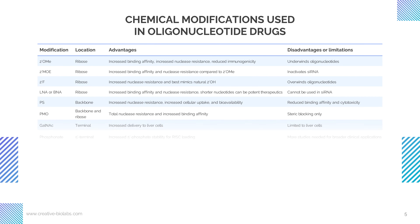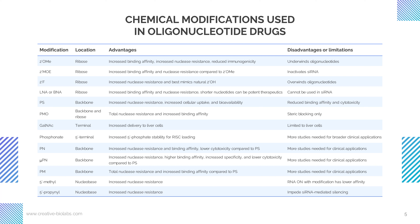Modifications for oligonucleotide drugs mainly focus on increasing binding affinity, nuclease resistance, specificity, cellular uptake, and bioavailability, as well as reducing related immunogenicity and cytotoxicity. However, these chemical modifications have also revealed certain limitations or disadvantages, such as application restriction to certain oligonucleotides and biodistribution limitations to specific organs. Thus, the combination of these chemical modifications is usually required for oligonucleotide drug optimization. Notably, limited data are reported for certain novel modification strategies, and further preclinical and clinical studies are needed to accelerate their applications.